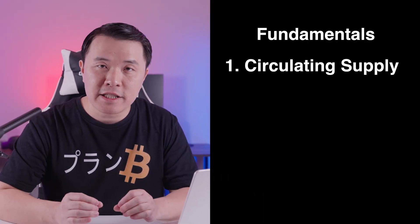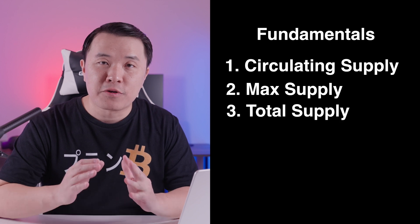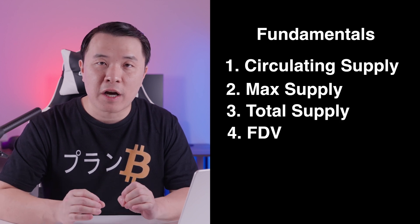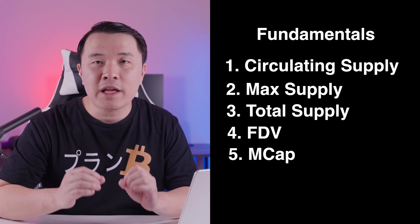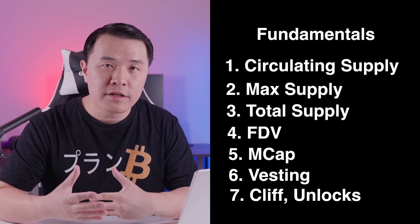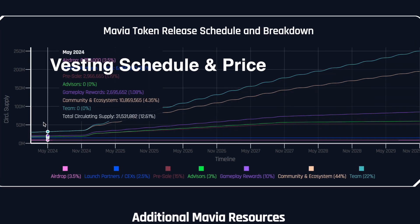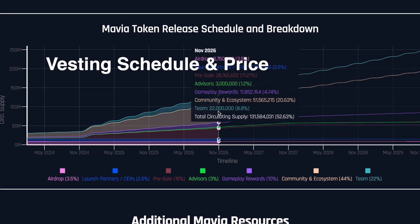In Part 1 of tokenomics we went through some fundamentals and basic concepts like circulating supply, max supply, total supply, the FDV (fully diluted value), the market cap, and then we looked at the vesting structure, cliffs, locks and unlocks and how they impact price. In today's video I want to take a deeper dive and look at the dynamics of supply and vesting schedules and how they impact price.